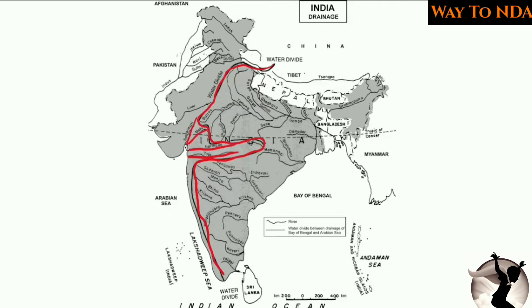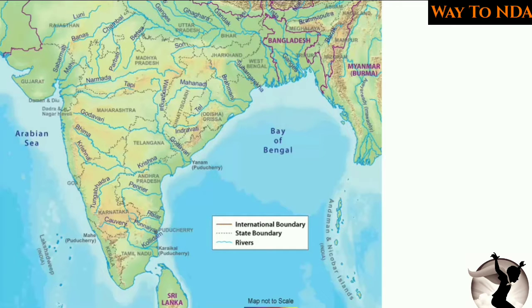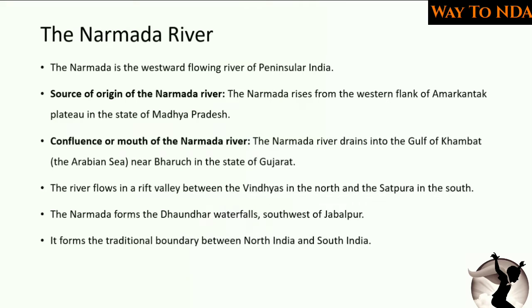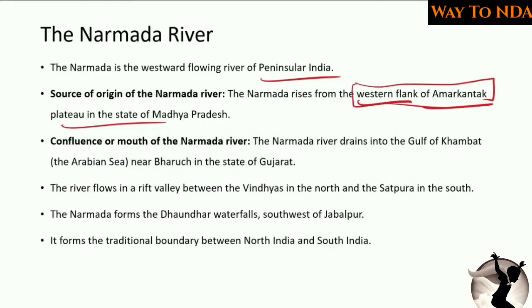The first river is Sabarmati, then Mahi, then Narmada. The Narmada river is the westward flowing river of peninsular India, and its source of origin is on the western flank of Amarkantak, in the state of Madhya Pradesh.